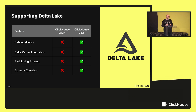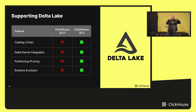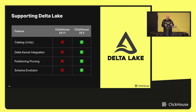For Delta Lake, we started with catalog integration with Unity, so you can actually query your data in Databricks, for example. One of the main benefits compared to Iceberg is that Delta Lake provides a library called Delta Kernel, which helps you understand the Delta protocol and abstracts it away — you provide your reader functions and the library handles all the metadata file parsing. For Iceberg, we had to implement everything from the ground up since there's no C++ library. With the Delta Kernel implementation, we were able to develop features like partition pruning and schema evolution much faster.